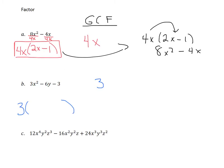So we're going to write a 3 out front, open our parentheses, and divide each of these terms by 3. 3x squared divided by 3 — the 3s cancel out and we're left with x squared. Negative 6y divided by 3 is negative 2y. And negative 3 divided by positive 3 is negative 1. You can check by multiplying back in to get 3x squared minus 6y minus 3.